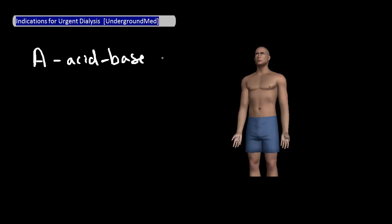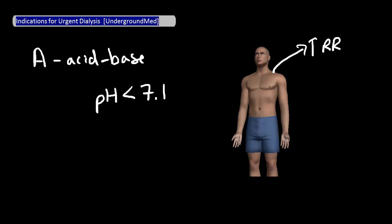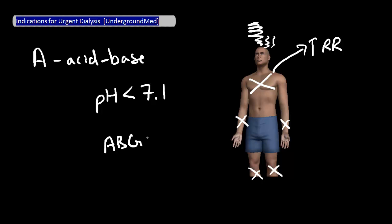Most prominently acidemia, since acid builds up in your blood because the kidneys aren't filtering it out. A pH level under 7.1 is the paper cutoff. Some possible symptoms include increased respiratory rate, confusion, chest pain, headaches, and weakness. You can check a patient's acid-base status using arterial blood gases, or you can look for an anion gap with a BMP.